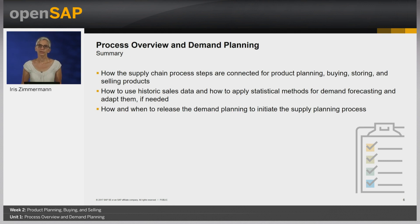In this unit you have learned how the supply chain process steps are connected for product planning, buying and selling products. You have seen how to use historic sales data and how to apply statistical methods for demand forecasting and how to adapt it if needed. In the end, we released the demand planning to initiate the supply planning process. This concludes our first unit together — see you in the next one.